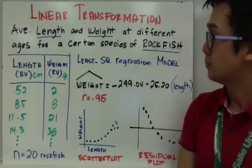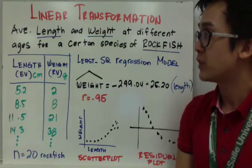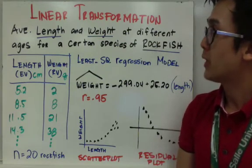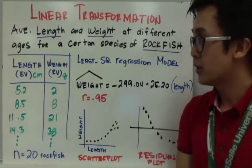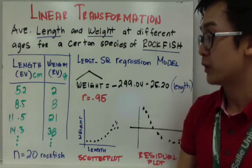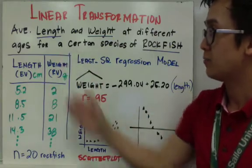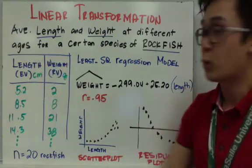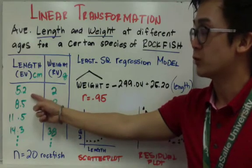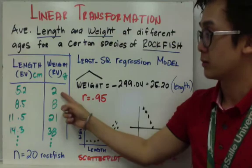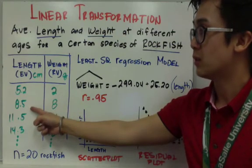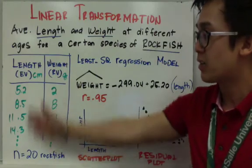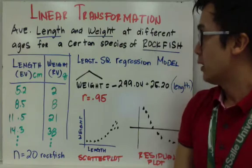We're transforming our linear model to see if we can achieve linearity by transforming one of the variables. Our dataset shows 20 recorded rockfish with their length and weight — average length and weight at different ages for a certain species were recorded. For example, a rockfish of 5.2 centimeters has a weight of 2 grams, and at 8.5 centimeters its weight is 8 grams.